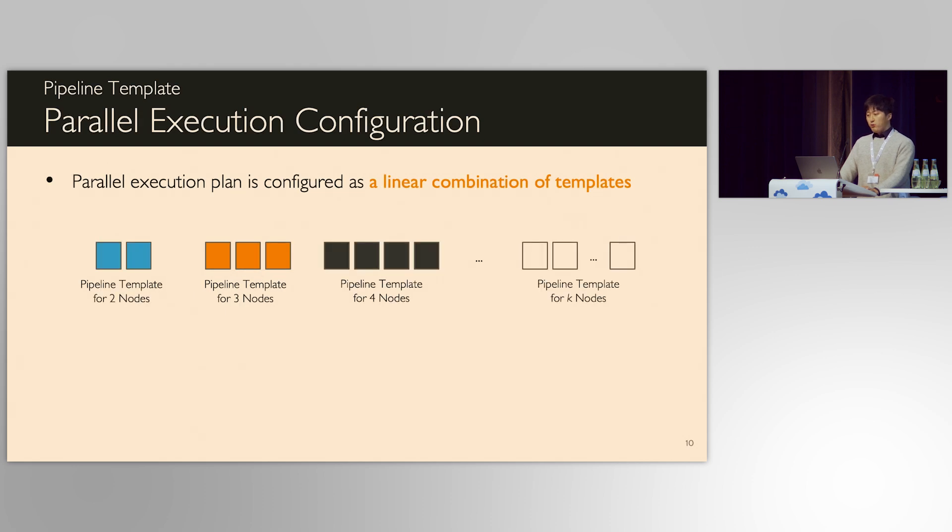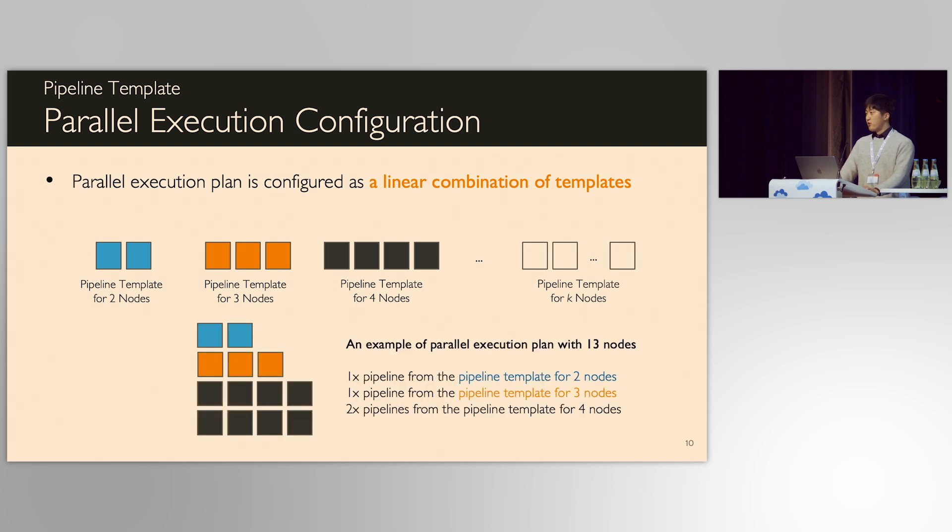Ooblack creates multiple heterogeneous pipeline templates, each of which has different number of nodes specified. The parallel execution plan is made as a linear combination of pipeline templates. As an example, parallel execution with 13 nodes can be configured as a linear combination of these three different pipeline templates. This way of configuration has two advantages. First, it is available to use all nodes, even if the number of nodes does not form a full grid. 13 nodes, as you know, is a prime number, but linearly combining different pipeline templates can cover all 13 nodes.